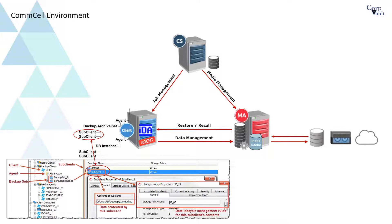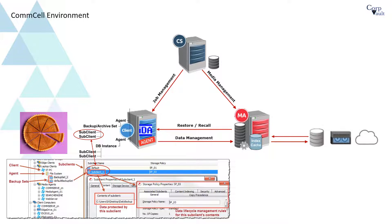To understand this concept better, try this analogy. Consider all of the file system data on the client's server to be a whole pie. Call the pie a backup set. If you wanted to divide the pie, you would cut it into pieces, or sub-clients. No matter how you slice it, each piece of pie is unique and is subtracted from the original pie. Simply stated, the data defined in the newly created sub-client is no longer part of the total data defined by the default sub-client.